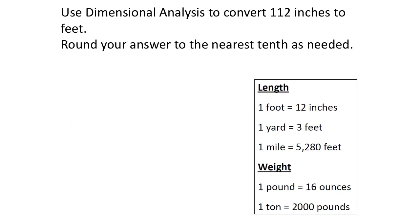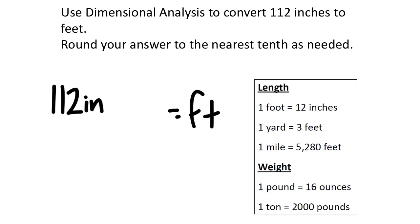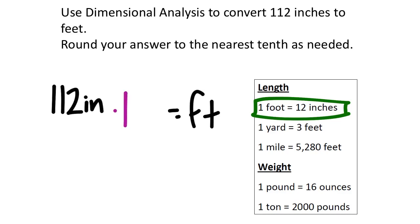So inches and feet — I need to find the relationship between inches and feet in these conversion factors. We have one foot equals twelve inches. I need to multiply this by one, simultaneously changing the units from inches to feet. I'll manipulate that one into a fraction. The fraction will be derived from one foot equals twelve inches, because anything divided by itself is one. I'm trying to get rid of the inches, so I need inches in the denominator to cancel them out.